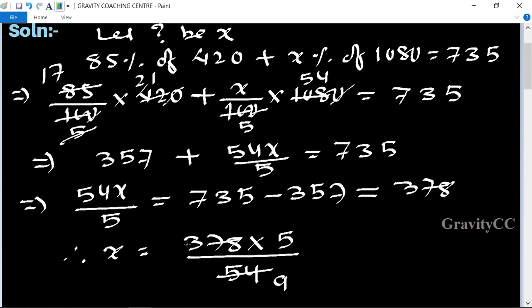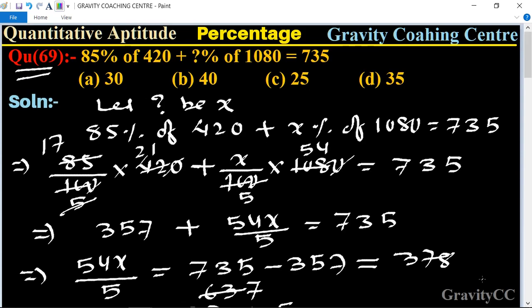So 7 into 5 is equal to 35, which is the required answer. Option D is the correct answer.